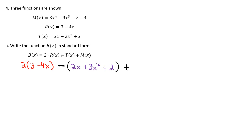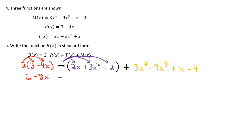Then I have a plus m, and our m is 3x to the 4th minus 9x to the 3rd plus x minus 4. So the next thing we want to do is take care of anything with these parentheses. In the first part we have a 2 in front of parentheses — that's distributive property. We're going to multiply the 2 to each number in those parentheses: 2 times 3 is 6, 2 times negative 4x is negative 8x. Now we move to the next set of parentheses — we have a negative. We are distributing that negative sign: negative times positive 2x is negative 2x, negative times positive 3x squared is negative 3x squared, negative times positive 2 is negative 2. And then we have the last polynomial, which just has an addition so we can leave it the way it is.